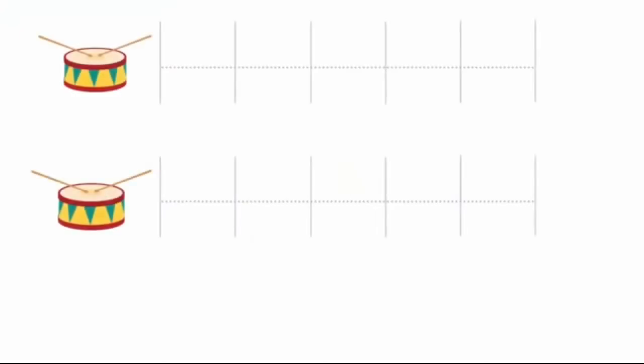Consider this example. If we strike a drum lightly, we hear a soft sound. It is because the sound produced is of low amplitude.